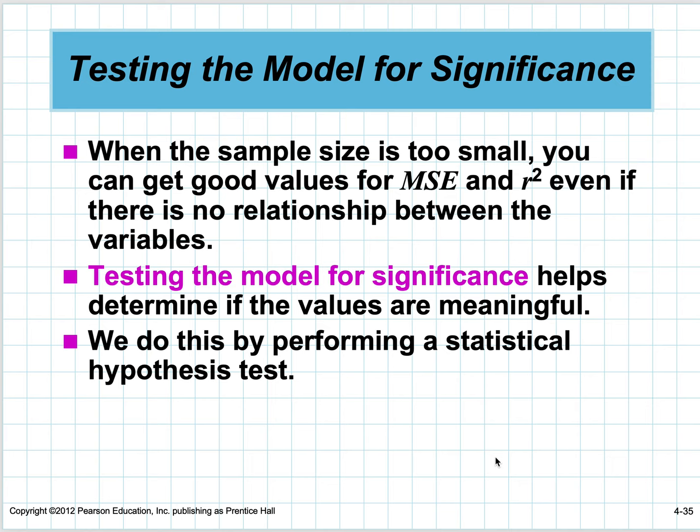When the sample size is too small, you can get good values for MSE and R-squared even if there's no relationship. Think about it: if you only have two points, two points determine a line—it's going to be R-squared of 100% with zero variance. Testing the model for significance helps. Two points is not enough to do a linear regression; you probably want a lot more than that.